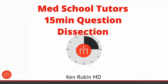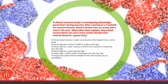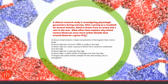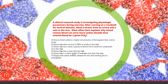Let's go ahead and get started. Here's the question we have — a typical Step 1 question about hematology, specifically hemoglobin and its relationship to oxygen and carbon dioxide transport in blood. A clinical research study is investigating physiologic parameters during exercise. After running on a treadmill for several minutes, blood is drawn from an artery and a vein in the arm. What effect best explains why mixed venous blood can carry more carbon dioxide than arterial blood for a given pCO2?